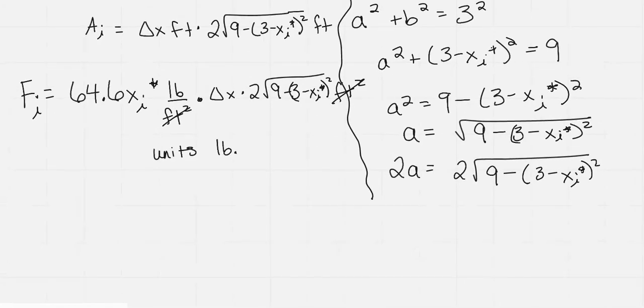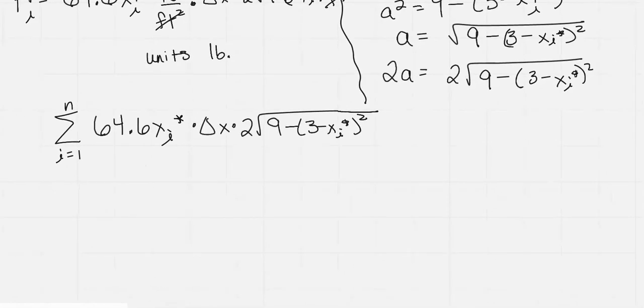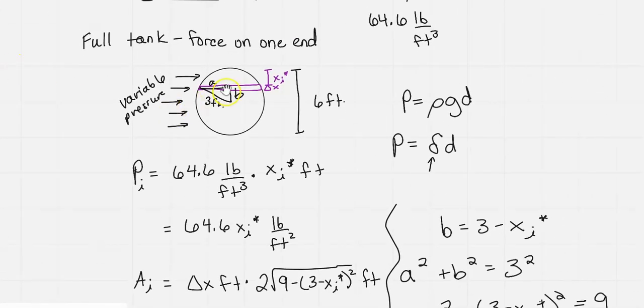If we do the Riemann sum, we have sum from i equals 1 to n of 64.6 x sub i star times delta x times 2 times the square root of 9 minus (3 minus x sub i star) squared. We can write this as an integral if we want to add up all of them and take the limit.